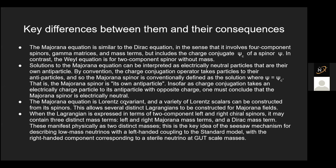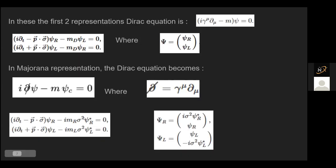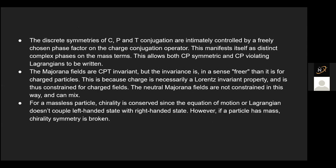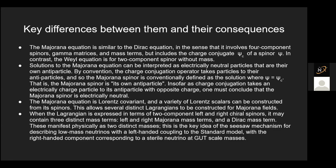A Majorana equation is Lorentz covariant — it does change under Lorentz transformation, and a variety of Lorentz scalars can be constructed from them. This allows for several distinct Lagrangians. Because left and right would both be incorporated in one equation in Dirac but have two different equations here, they have their own set of laws and their own fields.